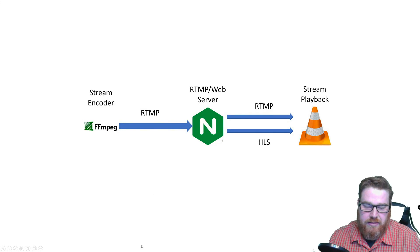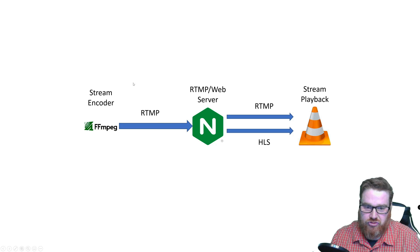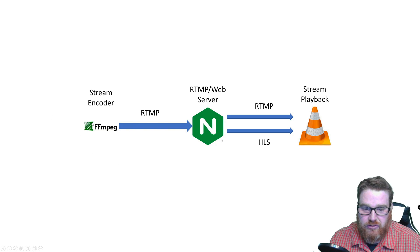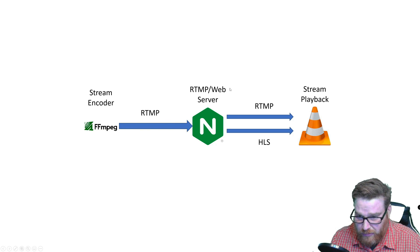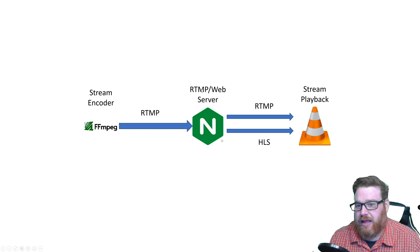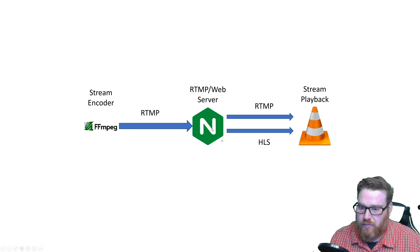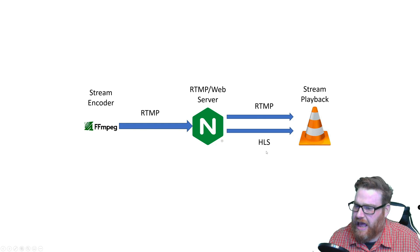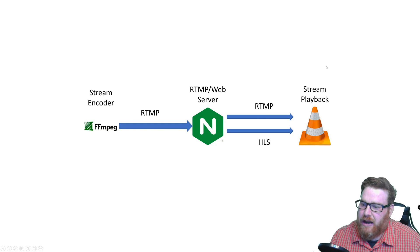We're going to have FFmpeg as our stream encoder, and I'm going to be streaming a video using FFmpeg using the RTMP protocol to the NGINX server. That's going to act as an RTMP ingest, and we'll also be able to do playback from the same server using RTMP, HLS, and we're also going to add DASH just to show that working, and then I'm going to use VLC to do the stream playback.